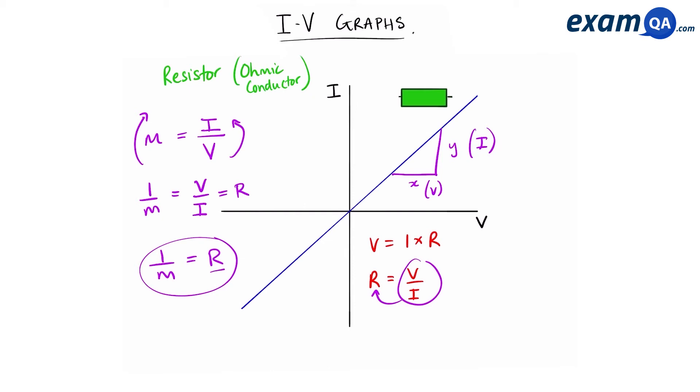This means that resistance is inversely proportional to the gradient. In other words, the steeper the line, the lower the resistance.